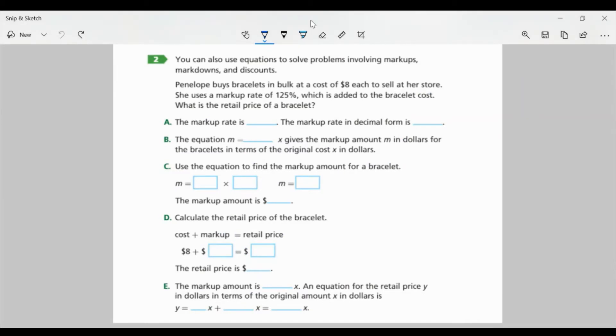So let's look at task number two on page 64. You can also use equations to solve problems involving markups, markdowns, and discounts. Penelope buys bracelets in bulk at a cost of $8 each to sell at her store. She uses a markup rate of 125%, which is added to the bracelet cost. What is the retail price of a bracelet?